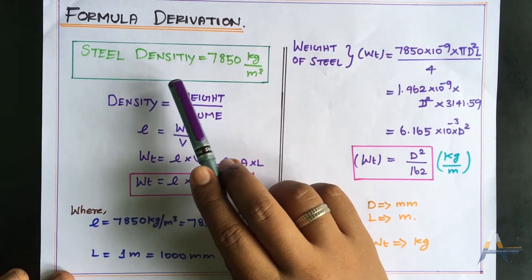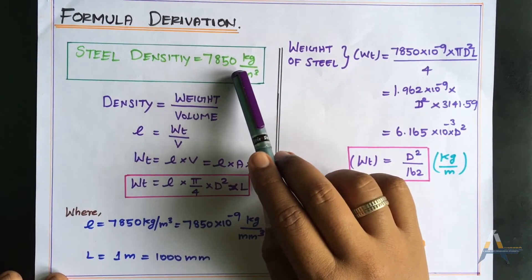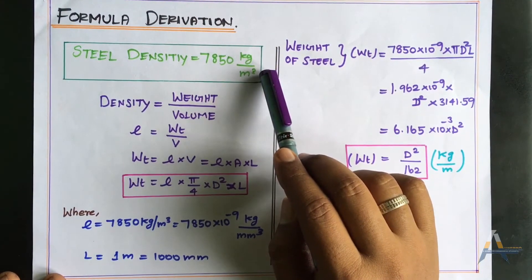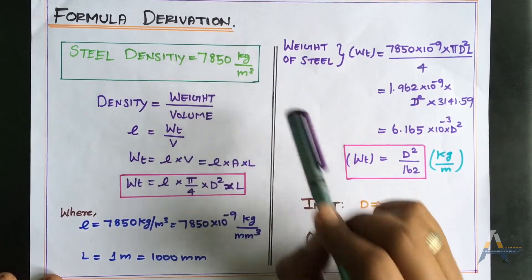Steel density or unit weight is 7,850 kg per m³. One cubic meter of steel weighs 7,850 kg. Now we can see how the formula is derived.